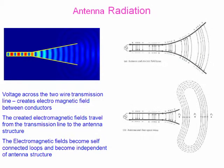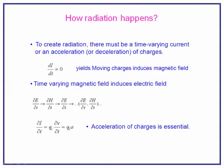This picture shows how electromagnetic radiation happens. The voltage across the two-wire transmission line creates electromagnetic waves between the conductors. The created electromagnetic field travels from the transmission line to the antenna structure. The electromagnetic fields become self-corrected loops and become independent of antenna structure. To create radiation, there must be a time-varying current or acceleration or deceleration of charges — that means, di/dt should not be equal to zero. This yields moving charges which induce electromagnetic field. Time-varying magnetic field induces electric field.